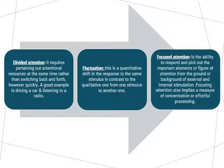Divided attention is like when we can keep doing two things together — for example, we can drive a car while listening to the radio. Fluctuation refers to how the amount of attention can increase or decrease, even beyond the shifting from one stimulus to another.